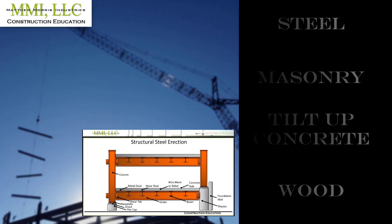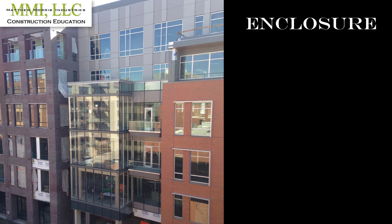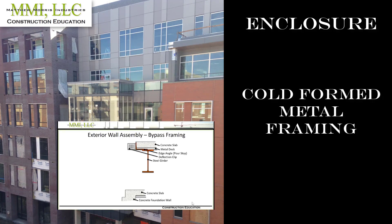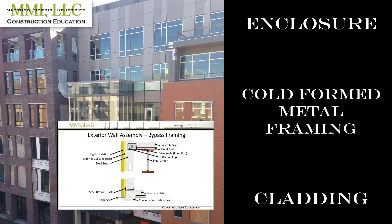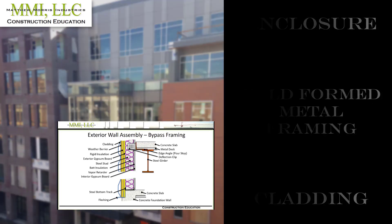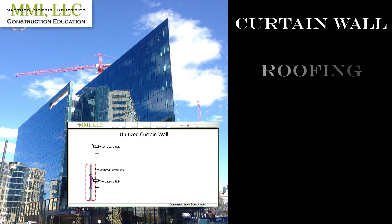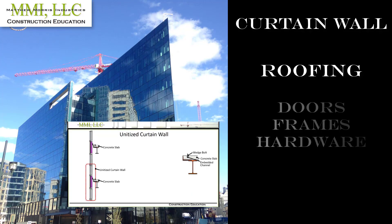Now our structural frame is in place, which opens up a lot of work on the exterior and interior of the building. In this course we learn about the enclosure systems next: exterior walls, cold-formed metal framing, curtain wall, roofing, doors, frames, and hardware, and we cap off this block with windows, glass, and glazing, completing our building envelope.